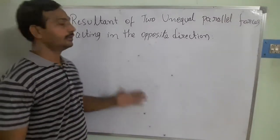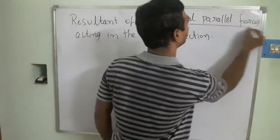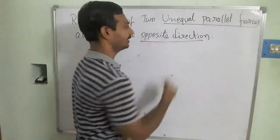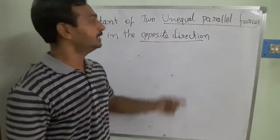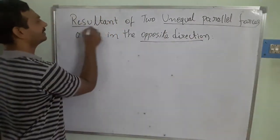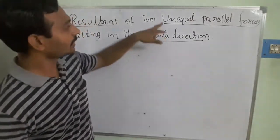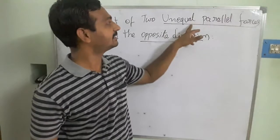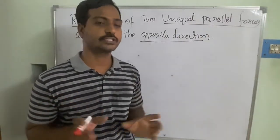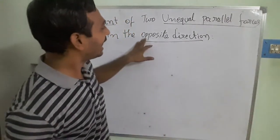Now we are going to see the resultant of two unequal parallel forces acting in the opposite direction. In the last video we calculated the resultant when equal parallel forces act in the same direction. Now in this problem, they are unequal parallel forces — meaning they have two different magnitudes, P and Q — and they are unlike parallel forces moving in the opposite direction.